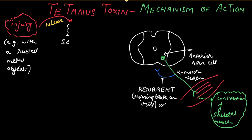This recurrent collateral synapses on a third neuron — an interneuron. This interneuron is the hero of the story; it is known as the Renshaw cell. This interneuron reigns in the horse — it prevents uncontrolled firing of the alpha motor neurons, preventing uncontrolled contraction of the skeletal muscles and maintaining an optimum level of contraction.